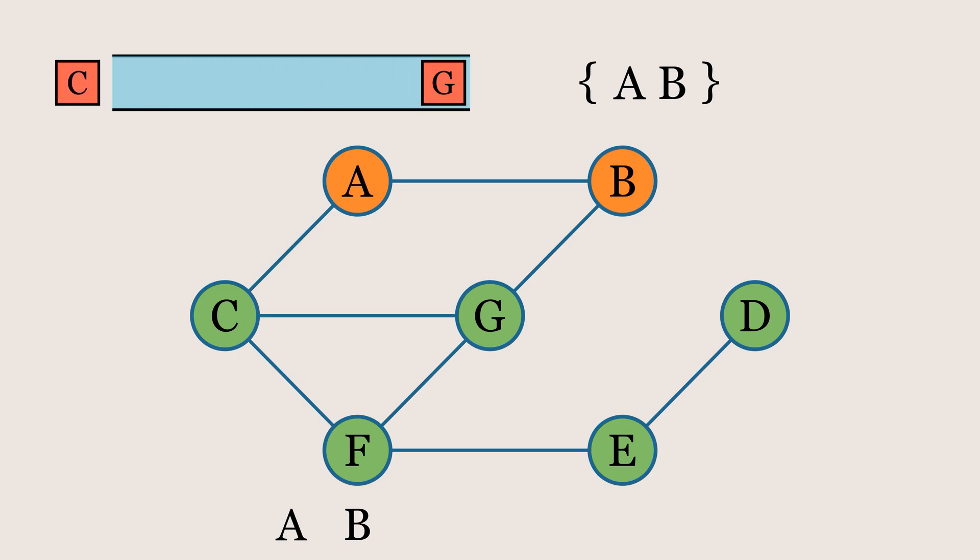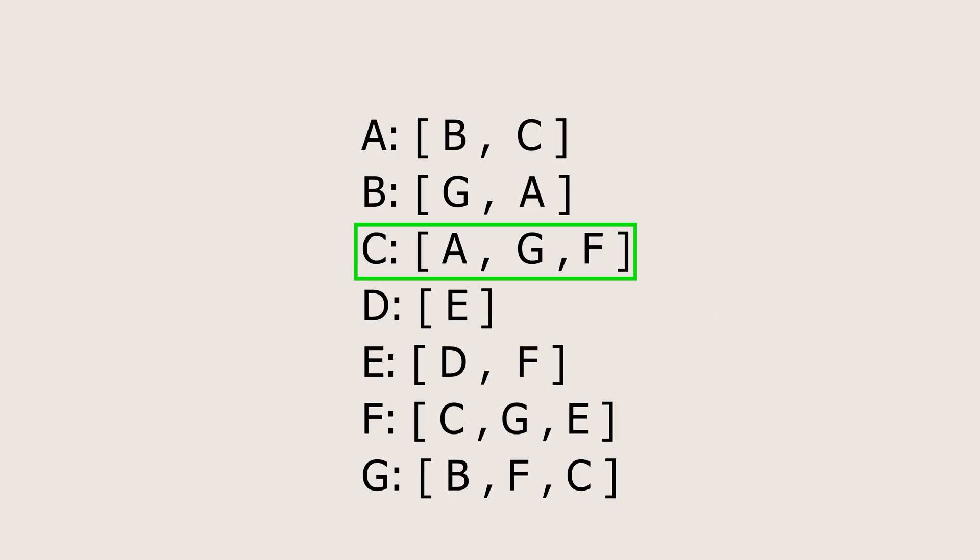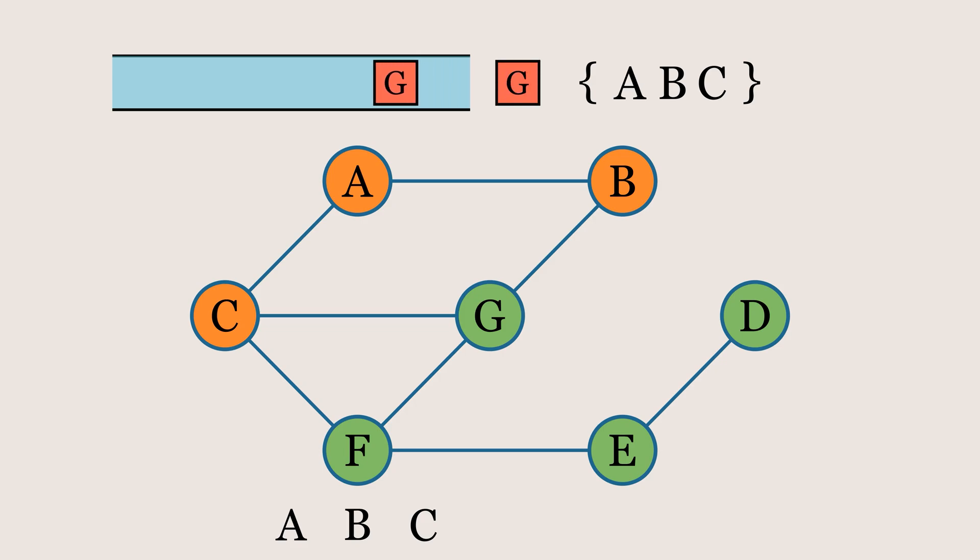In the next iteration, we pop element C from the queue, add it to the visited set, print it, and then insert its unvisited neighbor into the queue. Here, two of C's neighbors are unvisited, with node G appearing before node F in the adjacency list, so we'll insert node G first, followed by node F.